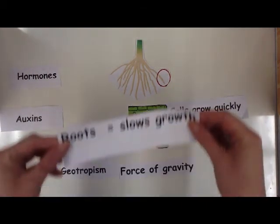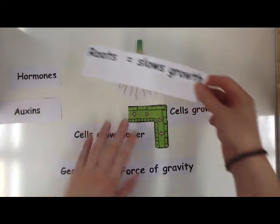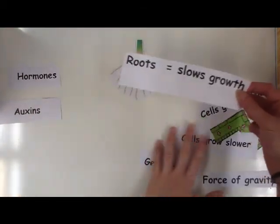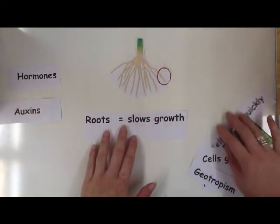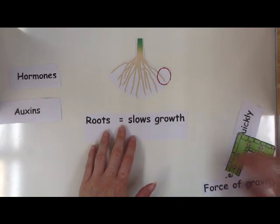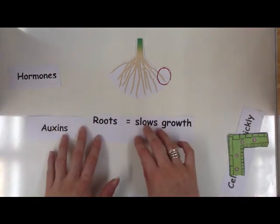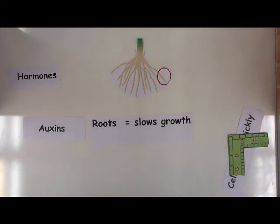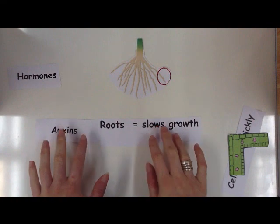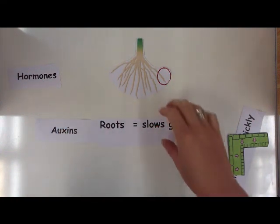So if you could take one thing away from here, auxin generally, it slows down the growth of cells if there is a large concentration of it. So that's the main thing that you need to take away from this.